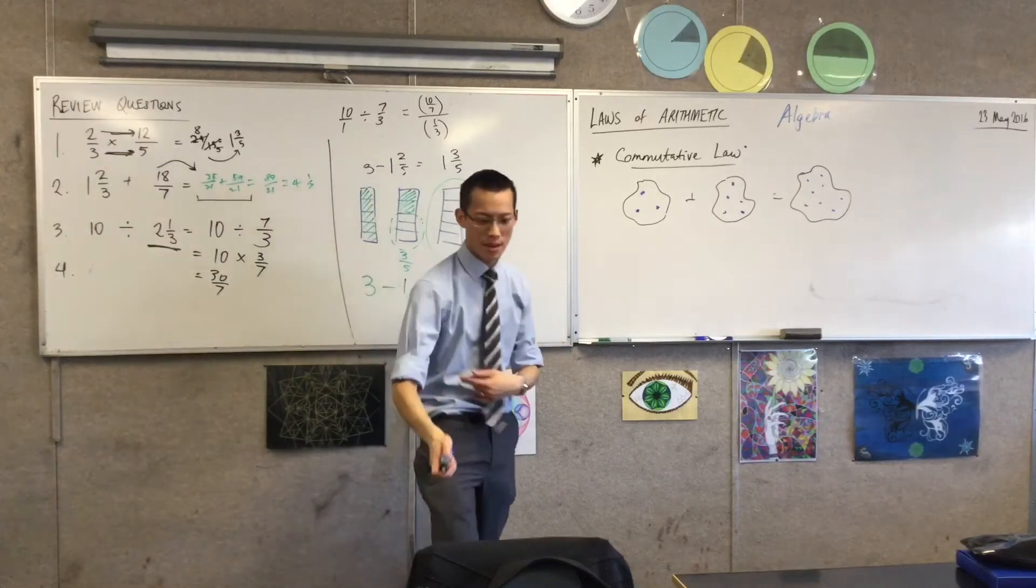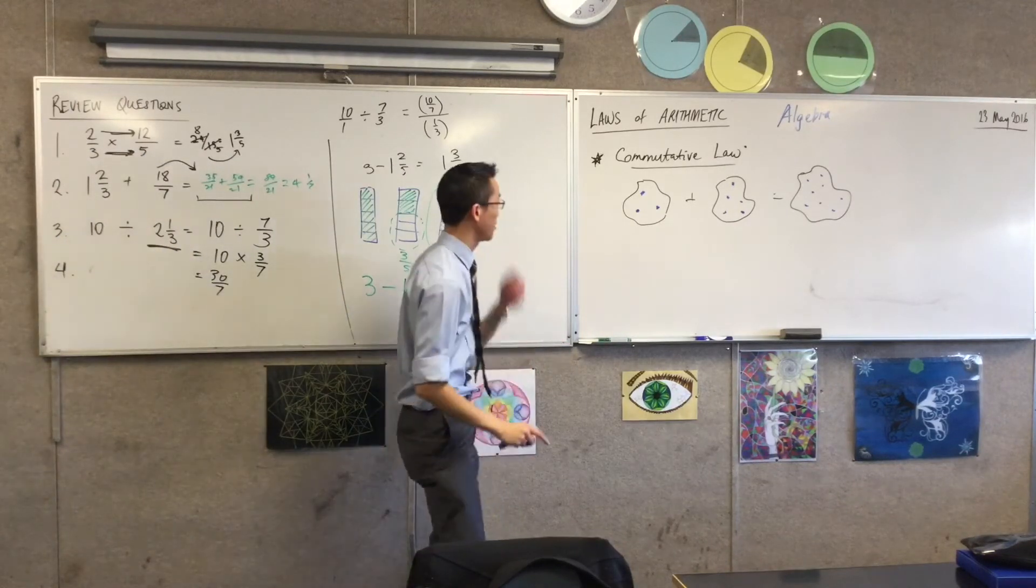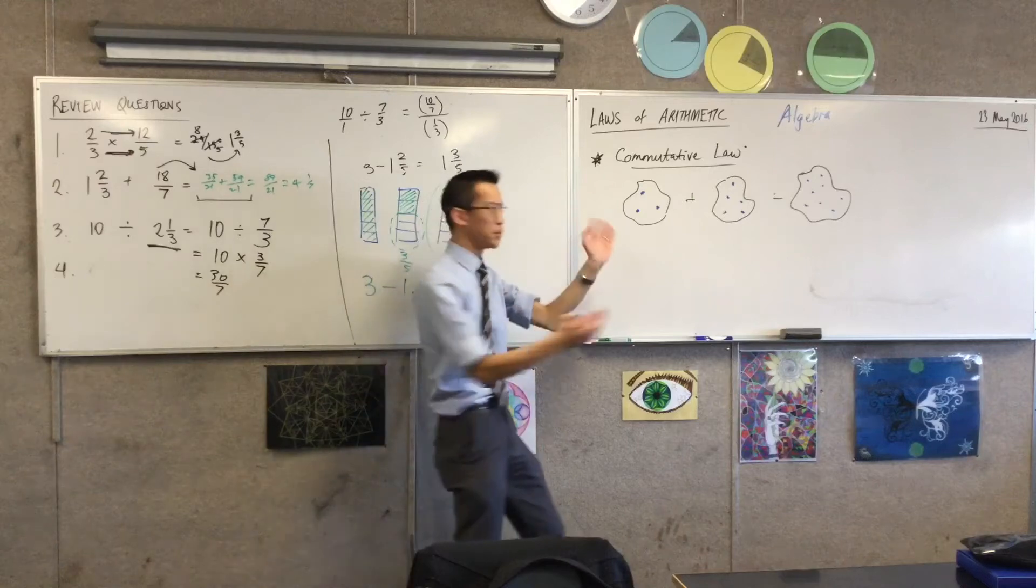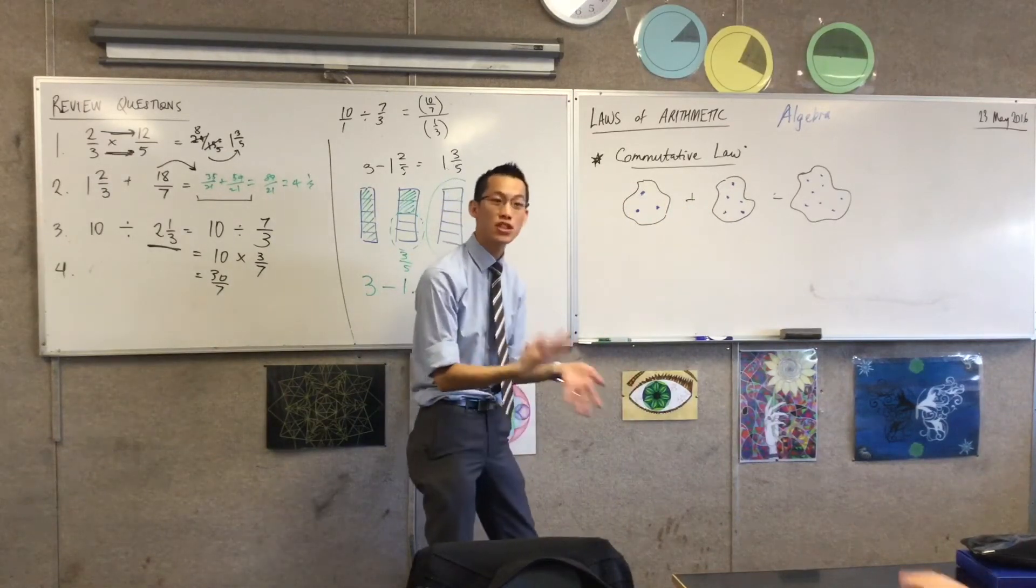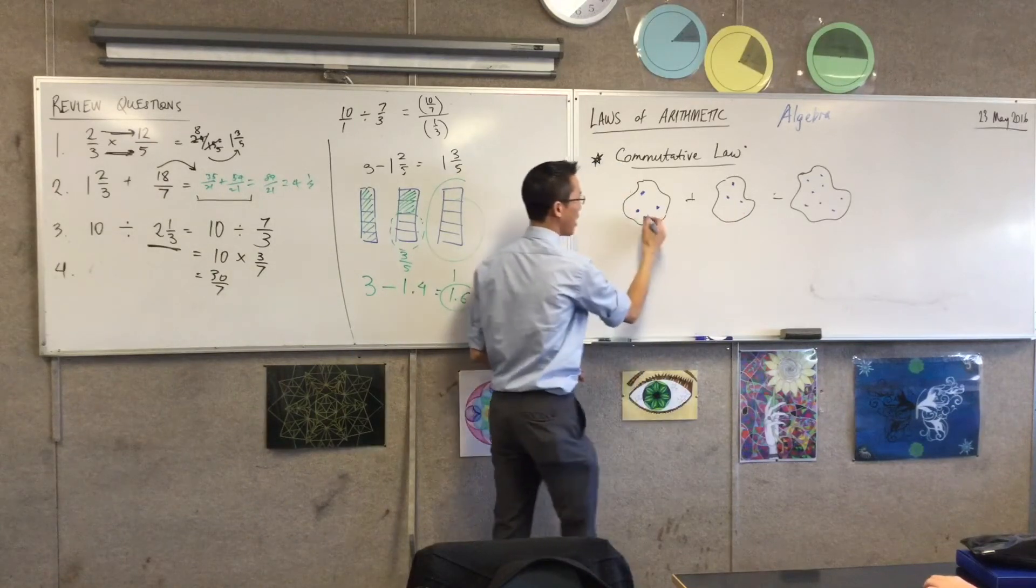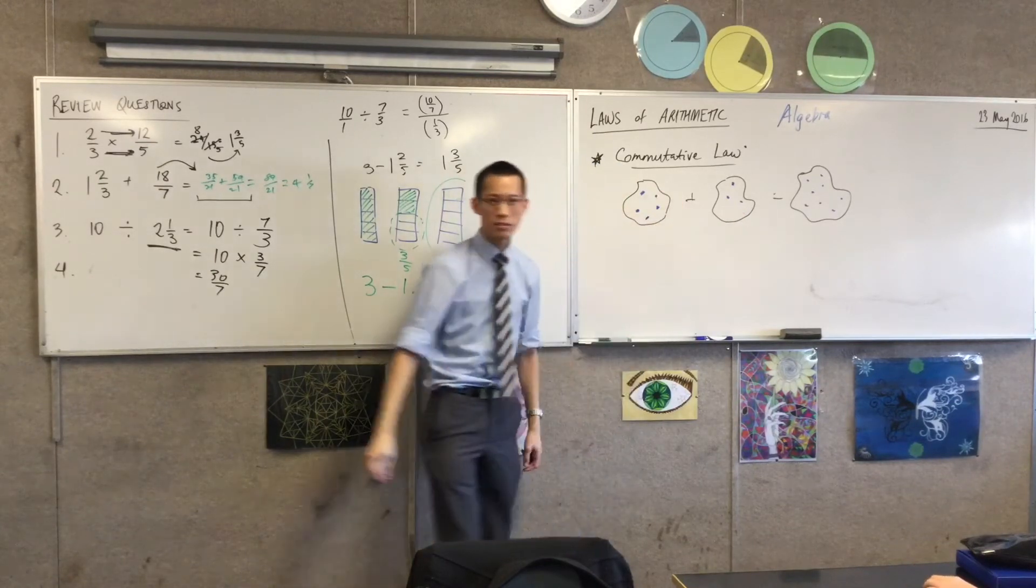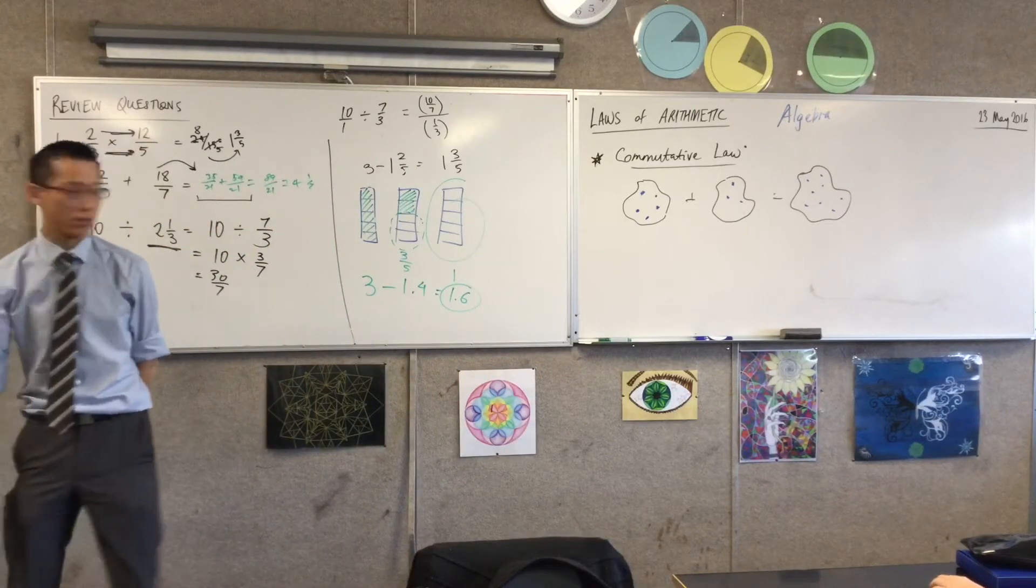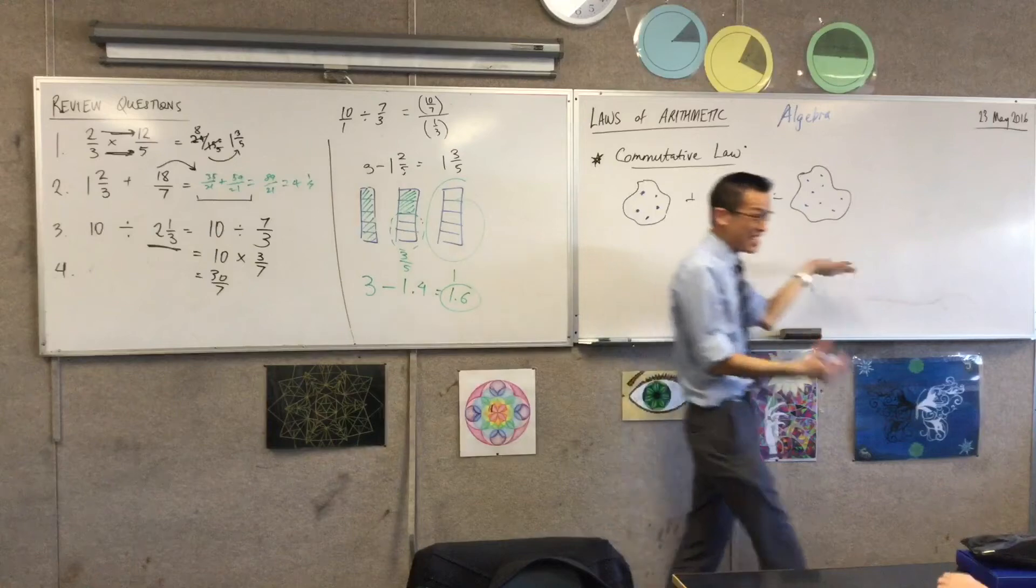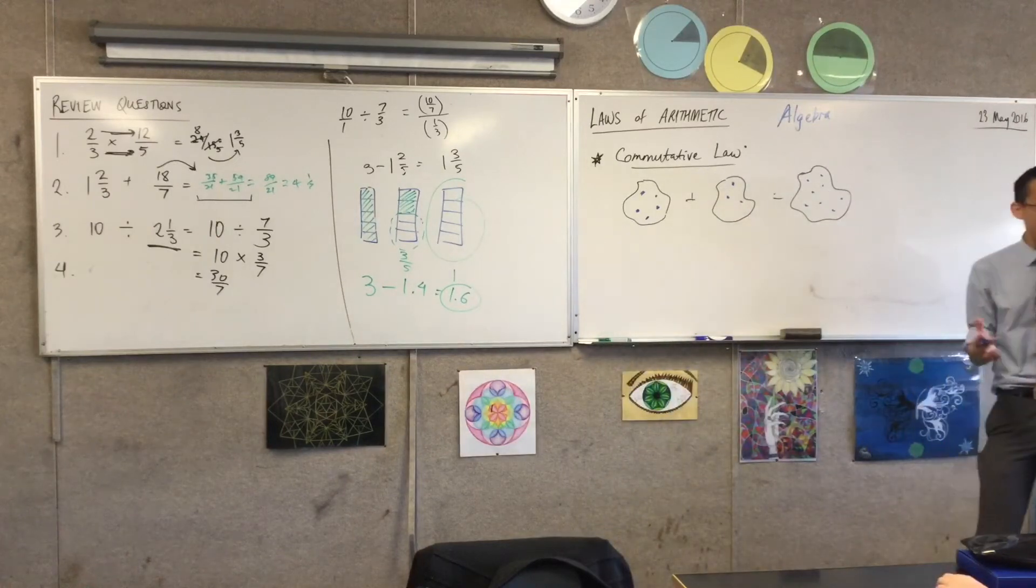However, watch this. If I commuted these marbles, pennies, M&Ms, whatever they are, change their positions a little bit, if I move two of them from here to here, is the statement still true? It is still true, right? Five plus three is still eight. You've still got the same eight M&Ms.